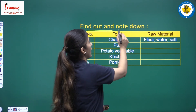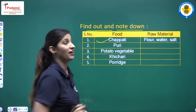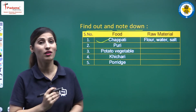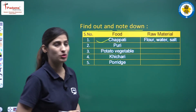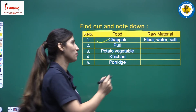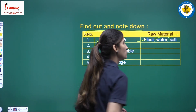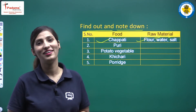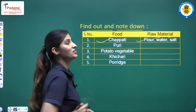Find out and note down: here we are given food items and we have to identify the raw materials used. First one is chapati — what raw materials are needed? Flour, water, and salt. We need flour, water, and salt. Second one is puri — do you like puri?